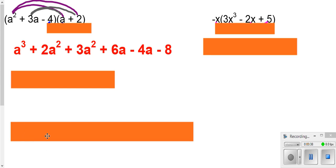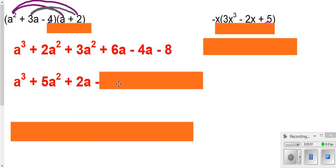And then we can collect like terms. We have no other cubes, so we'll just have our 1a cubed. Here, these are both a squareds. We can put those together, get a total of 5 of them. Here, we have just normal a's, so we can put those together. We get 2a, and we have a negative 8.